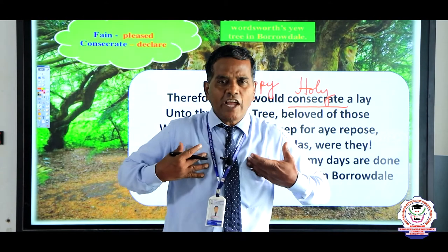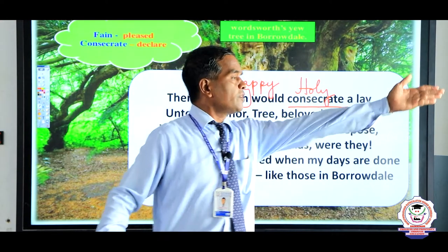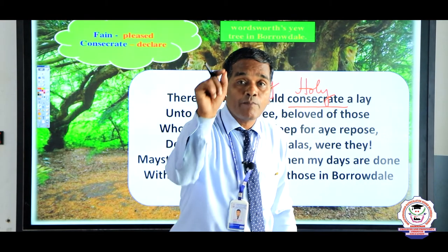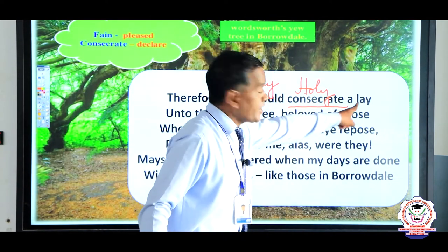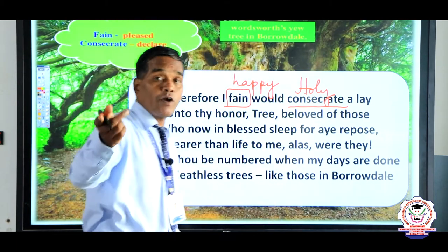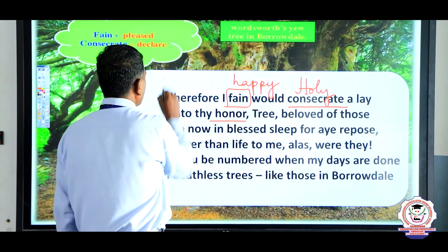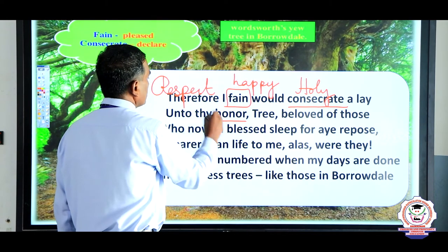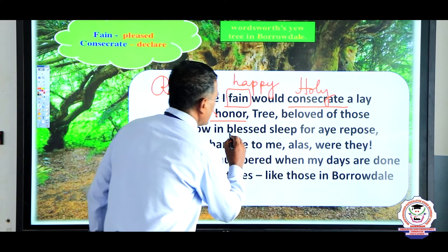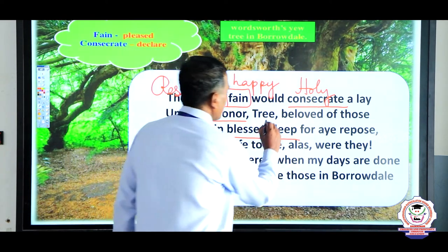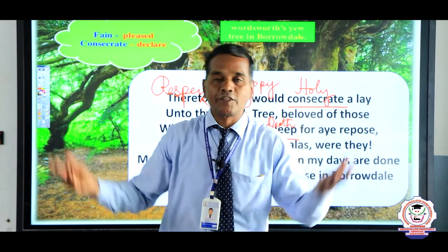'Consecrate a lay' — 'lay' refers to a layman, a common person (as opposed to priests). She wants to consecrate the tree as a layman, make it holy, give it immortality. 'Unto thy honor' — she wants to give respect to the tree. 'Beloved of those who now in blessed sleep' — 'blessed sleep' refers to death. Her brother and sister are no more; they are gone to take their eternal rest.